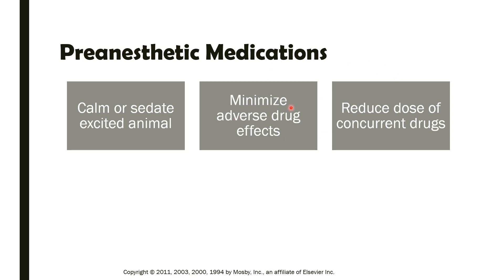This is again the concept of balanced anesthesia. When we use a pre-anesthetic agent to relieve pain, calm the animal, or sedate the animal, we use small doses of that particular drug before inducing anesthesia, then reduce the inhalant gas required to maintain anesthesia. By doing this, we use different groups of drugs with different functions in order to minimize the development of adverse drug reactions in the animal.